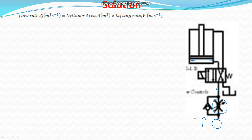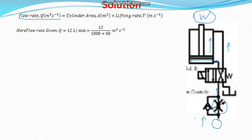We know that flow rate in cubic meter per second is equal to cylinder area multiplied by the lifting velocity. The flow comes into the cylinder so that the load can be lifted vertically. The flow rate Q is given as 12 L per minute. We convert it: 12 divided by 1000 gives cubic meters per minute, then divide by 60 to get cubic meters per second.